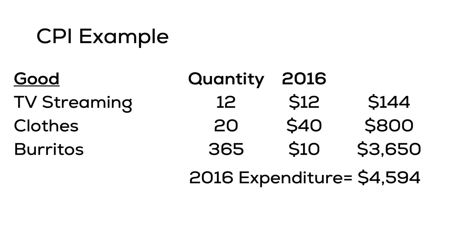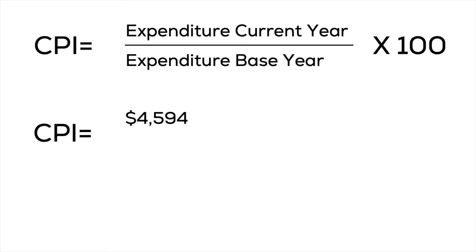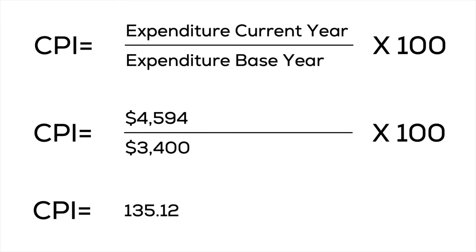Expenditure on clothing is 20 times $40, or $800. Burrito spending is 365 times $10, or $3,650. The total expenditure for 2016 is $4,594. To calculate the CPI, we divide $4,594 by $3,400 and multiply by 100, which gives us 135.12. The CPI in 2016 is 135.12.